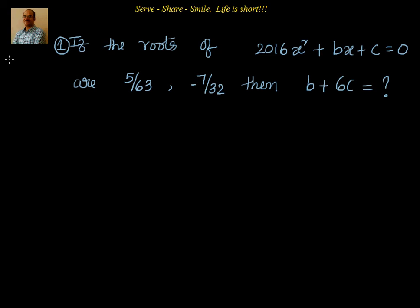Hello friends, welcome. Let's look at this problem. If the roots of a quadratic equation 2016x² + bx + c = 0 are 5/63 and -7/32, then what's the value of b + 6c?